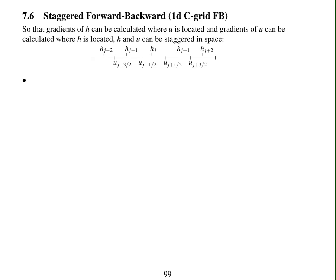In the previous video we saw that if you have the height and the velocity stored at the same locations when solving the shallow water equations, you get grid scale waves that don't propagate, so we showed that the dispersion relation showed grid scale waves with zero frequency.